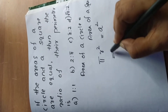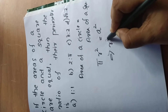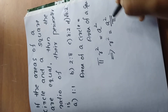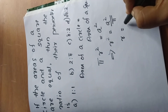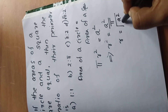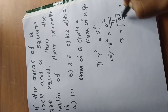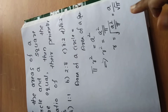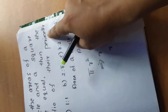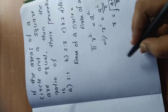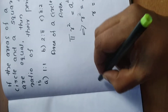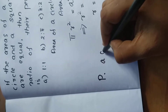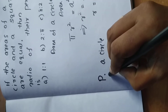From this, we find r². r² equals a²/π, so r is equal to the square root of a²/π, which simplifies to a divided by √π. Now we will find the ratio of their perimeters.